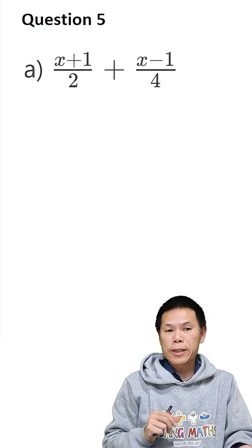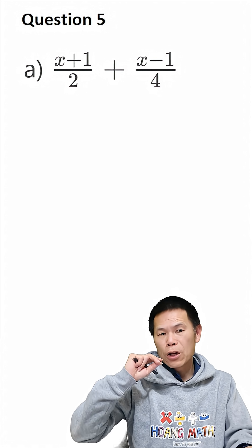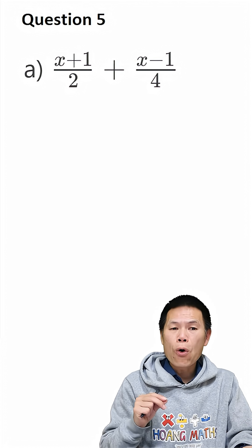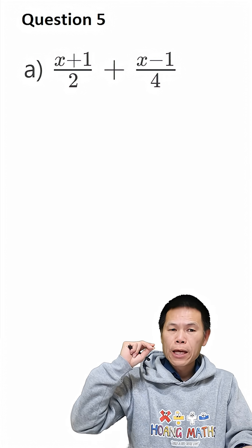There are different common denominators, so we need to find the lowest common denominator first. So therefore, 2 and 4, so the lowest common denominator is 4.